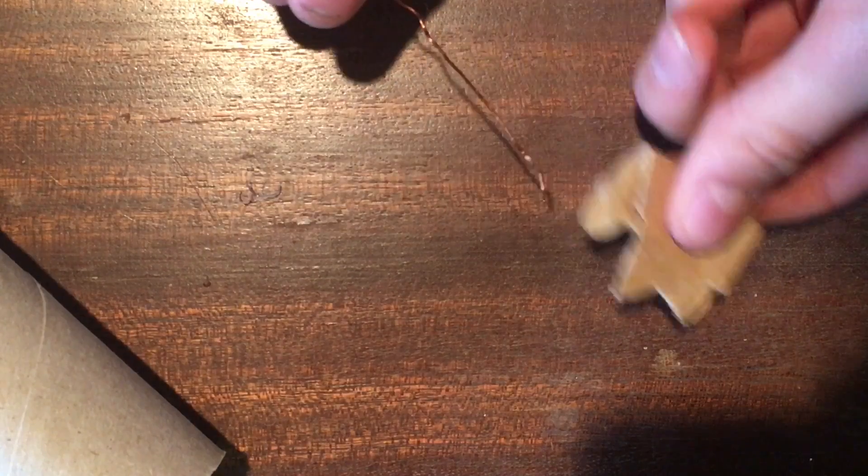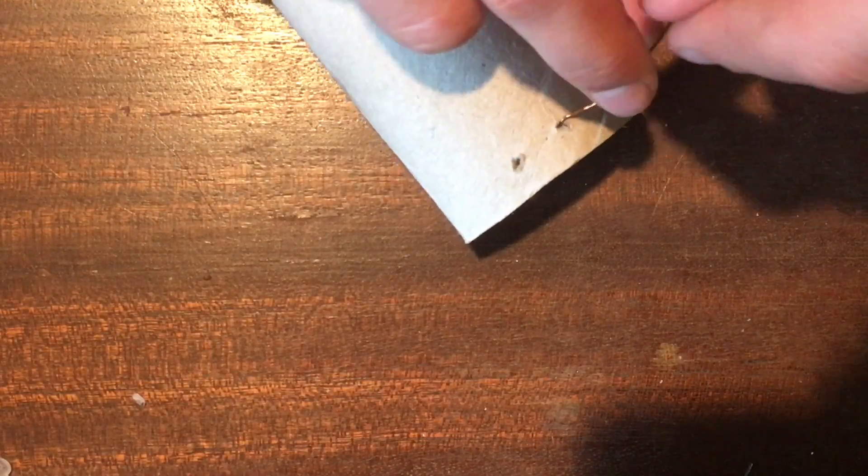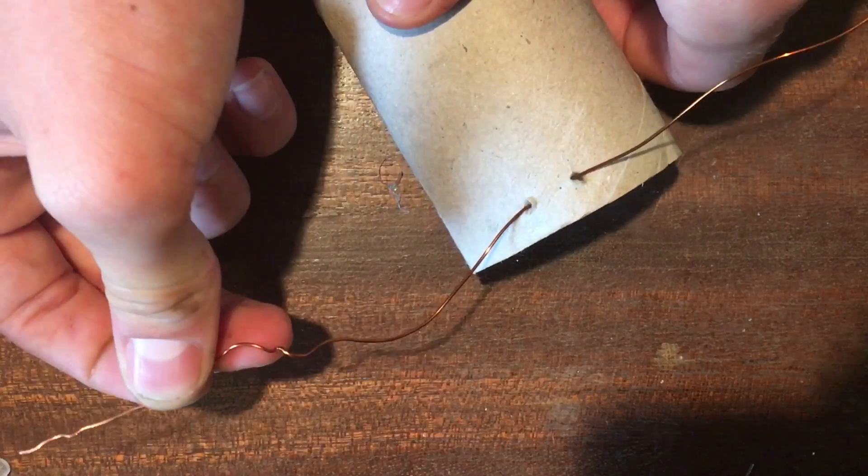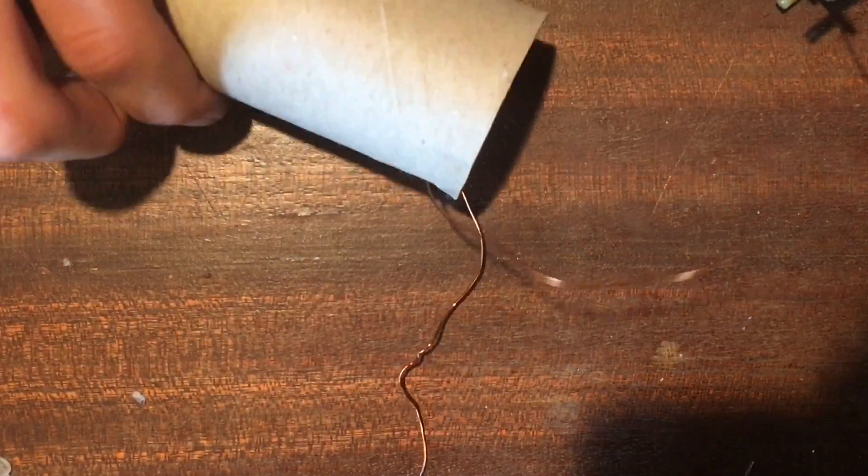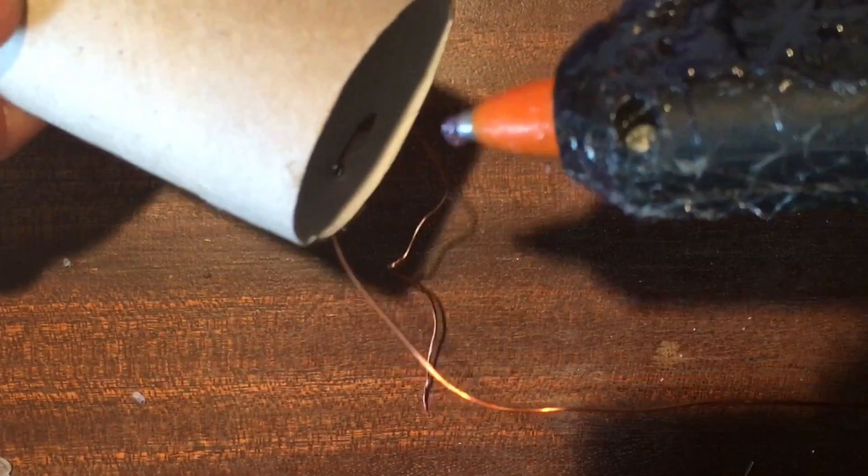Then take off the enamel coating off the copper wire with some rough sandpaper. Then thread it through the holes like this, leaving 10 centimeter excess. Secure it from behind with hot glue.